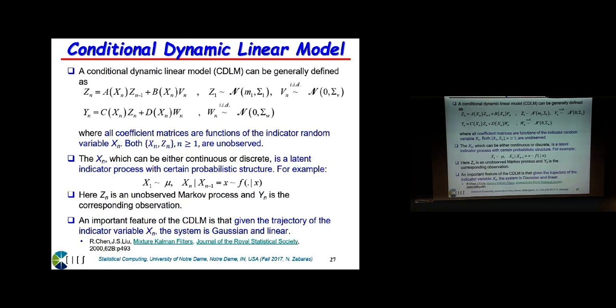Here is the definition of a conditional linear Gaussian model. In our classical sequential Monte Carlo we had a state X. Now I have two unknown state variables: X_n and Z_n. My observation equation is similar to what I had before. The evolution of Z is similar to what we considered before, but notice that the matrices A, B, C, D are all functions of the other state variable X_n.